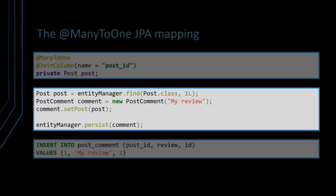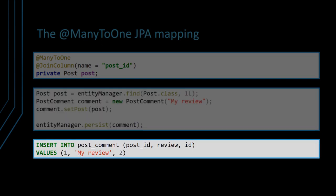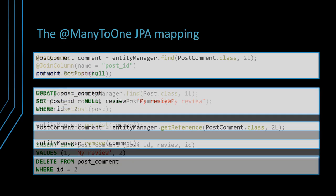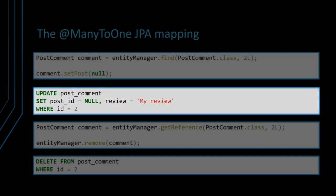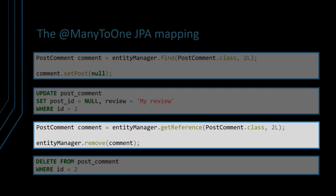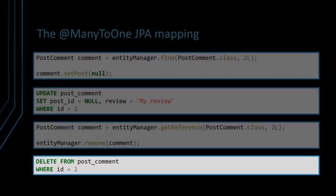When persisting one post comment which is associated to a given parent post entity, Hibernate generates the proper SQL insert statement. After loading a post comment entity, if the post association is set to null, at flush time, Hibernate is going to generate an update SQL statement which will set the underlying foreign key column to null. Also, if the post comment entity is removed in the currently running persistence context, a delete statement is going to be generated.